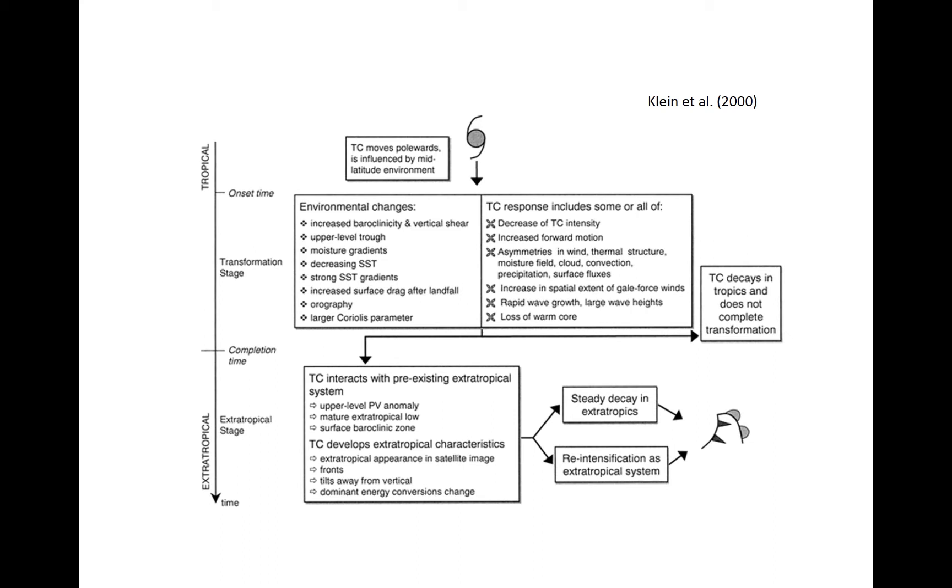The chart shown here lists changes that a TC encounters and undergoes as extratropical transition occurs. As a TC encounters an environment with greater baroclinicity, essentially just another way of saying that horizontal temperature gradients become non-negligible, it also usually encounters strong vertical wind shear, which causes the TC to take on a strongly sheared appearance, often with the strongest convection to the north and east of the center in the northern hemisphere. The TC core then tilts toward colder air with height, and the primary source of kinetic energy in the cyclone transitions from the release of latent heat, which happens in the baroclinic tropical environment, to baroclinic processes such as what you encountered in a mid-latitude dynamics course.